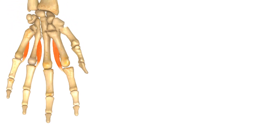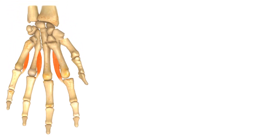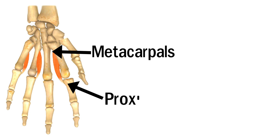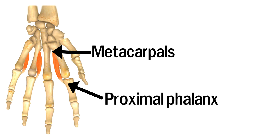Let's have a look. These are the metacarpals. As you can see, the muscles originate from a medial or lateral surface. And this is the proximal phalanx, the point of insertion. These muscles are the palmar interossei.